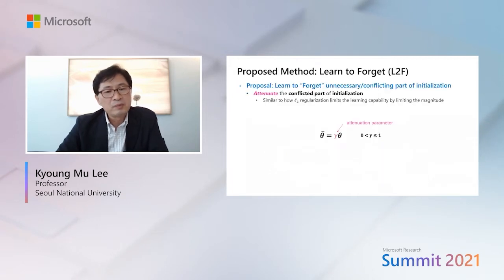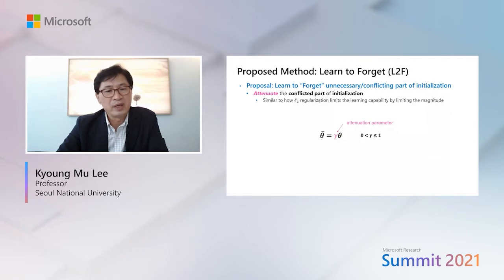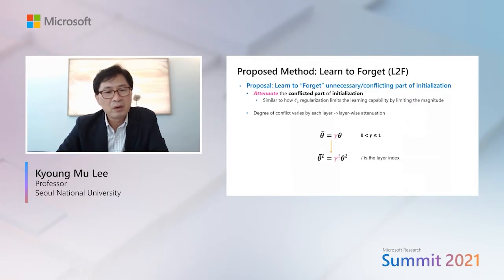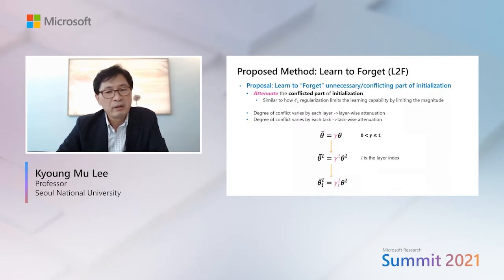Upon these observations, we propose a novel learning-to-forget scheme called L2F, that forgets the part of initialization that conflicts with the learning of each task. This can be done by attenuating the initialization by gamma. Considering how the degree of conflict differs among layers, we aim to control the amount of attenuation or forgetting for each layer L. Similarly, we also desire to control attenuation parameters for each task I.